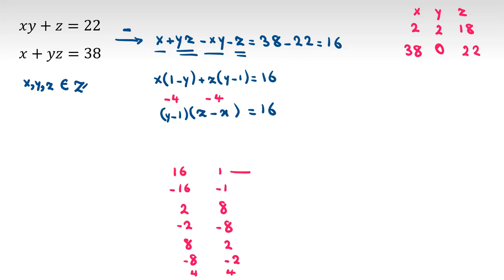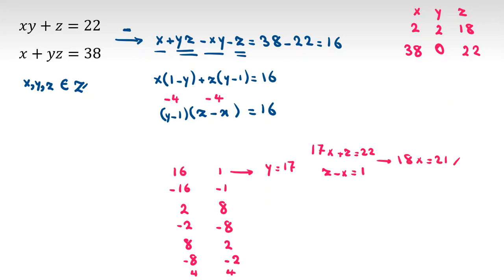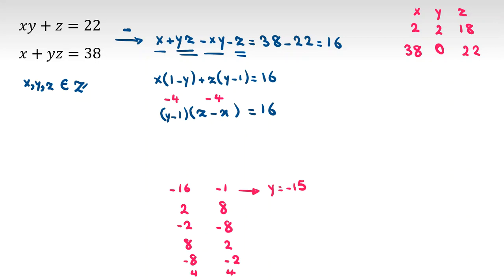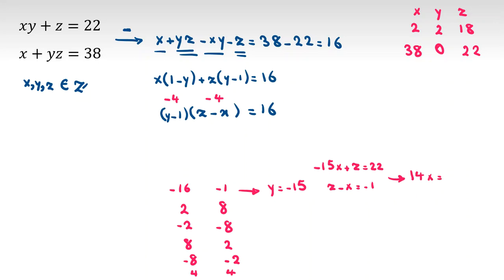Case (16, 1): y minus 1 = 16, so y = 17, z minus x = 1. Replacing: 17x + z = 22. Subtracting gives 18x = 21, which is impossible since x must be integer. Case (-16, -1): y = -15, z minus x = -1. Replacing: -15x + z = 22. Subtracting gives 14x = -23, again impossible.